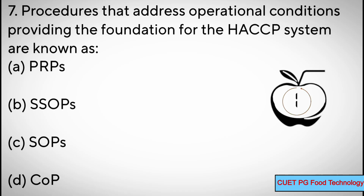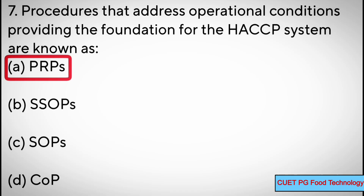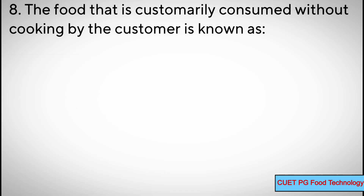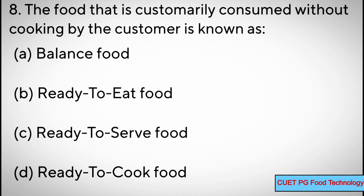Question number eight: the food that is customarily consumed without cooking by the customer is known as — options: A) balanced food, B) ready to eat food, C) ready to serve food, D) ready to cook food. Correct answer: B) ready to eat food.